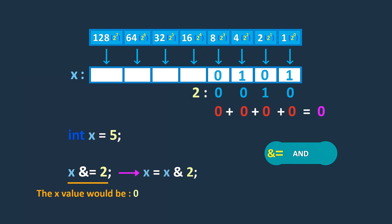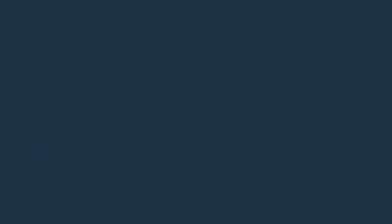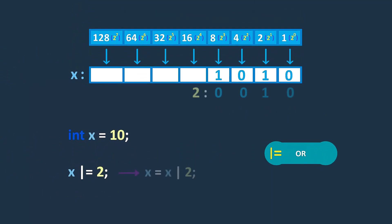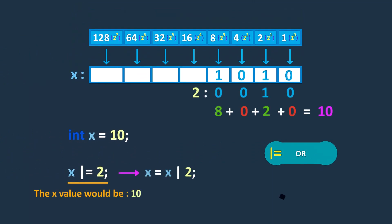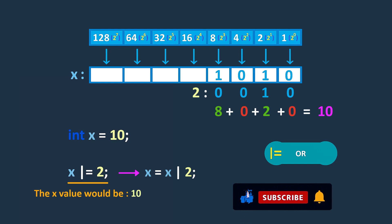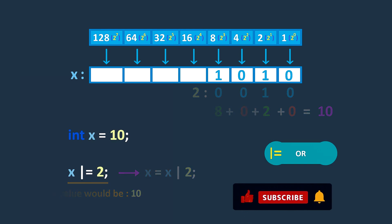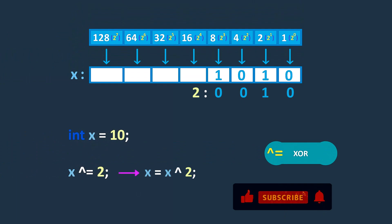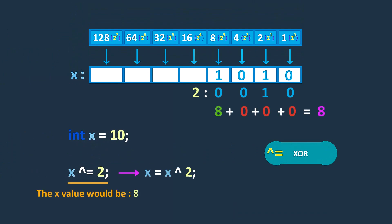Similarly, the bitwise OR and XOR assignment operators work the same way. In the OR example, the value of x would be 10. In the XOR example, the value of x would be 8.